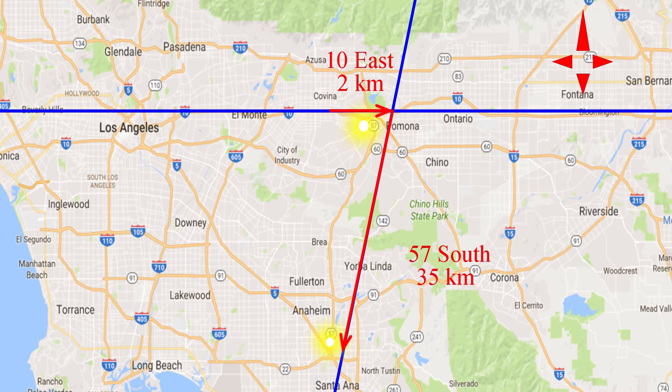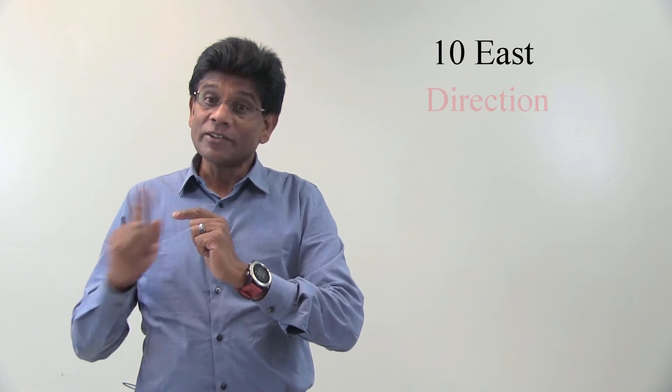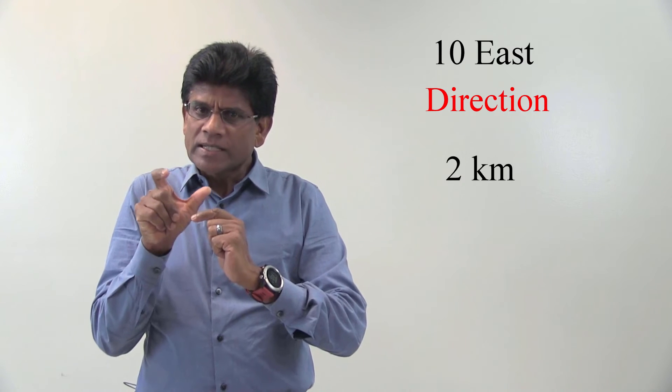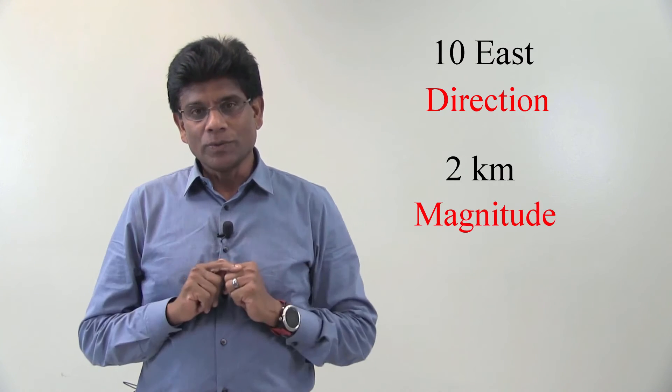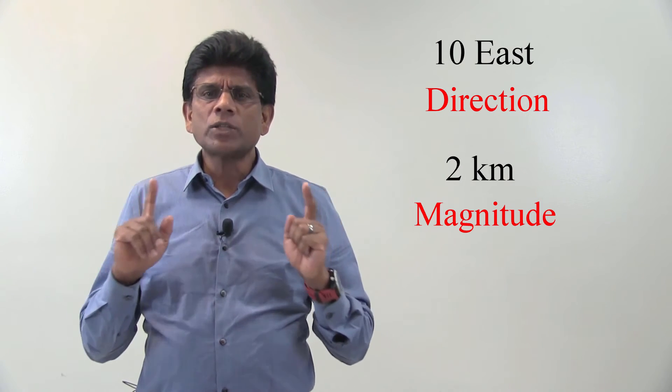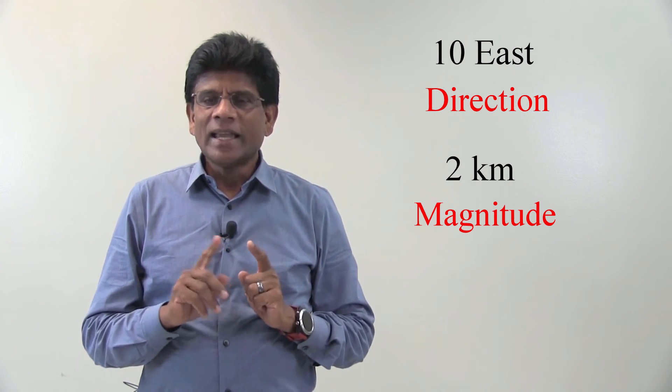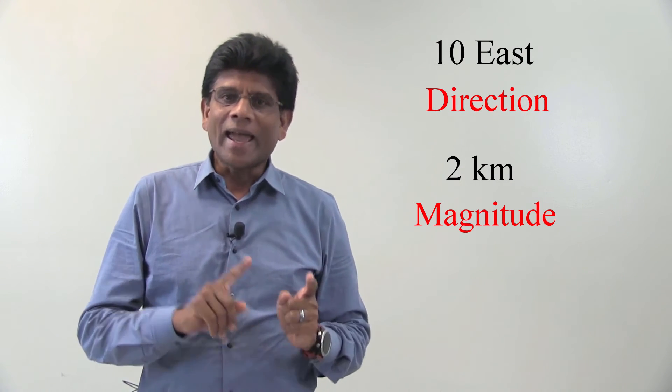If you look at these statements closely, you will see we are stating two pieces of information for each segment. First, 10 east tells you which way to go. So this gives the direction. Then 2 kilometers says how far to go. So this gives the magnitude. We can call this quantity as vector because it has a direction and a magnitude.